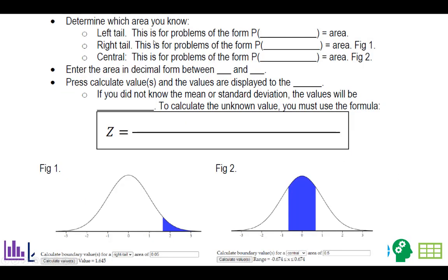Then you have to determine if you want left tail, right tail, or central. Left tail is for problems of the form x is less than the number. Right tail is x is greater than a number. And central is x is between two bounds.